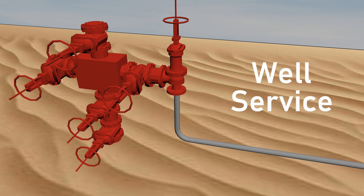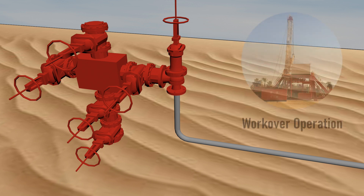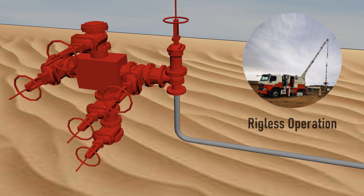If any problem is encountered, workover and well intervention operations will be essential to overcome such problems and restore well productivity. A workover is a major operation involving significant intervention in a well. It often requires bringing in a workover rig and can involve extensive procedures like pulling and replacing tubing, repairing or replacing downhole equipment, or even re-completing the well in a different zone. Well intervention, on the other hand, refers to any operation carried out on a live producing well to maintain or improve its performance. These operations are usually less invasive than workovers as they neither require a full rig nor killing the well.